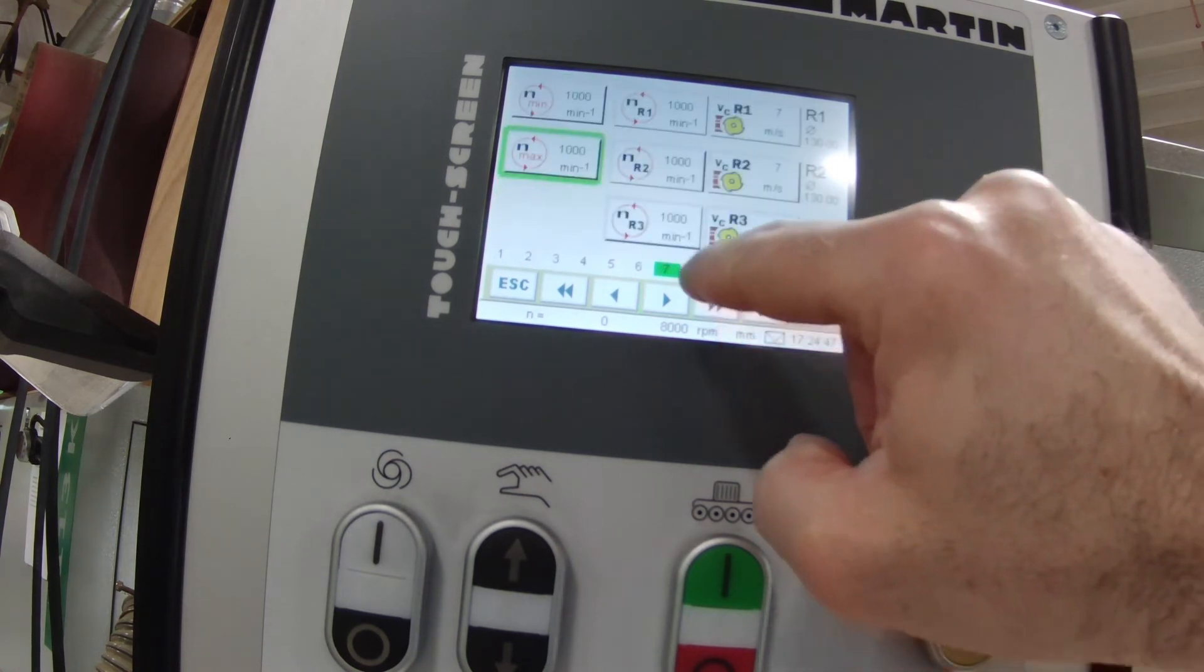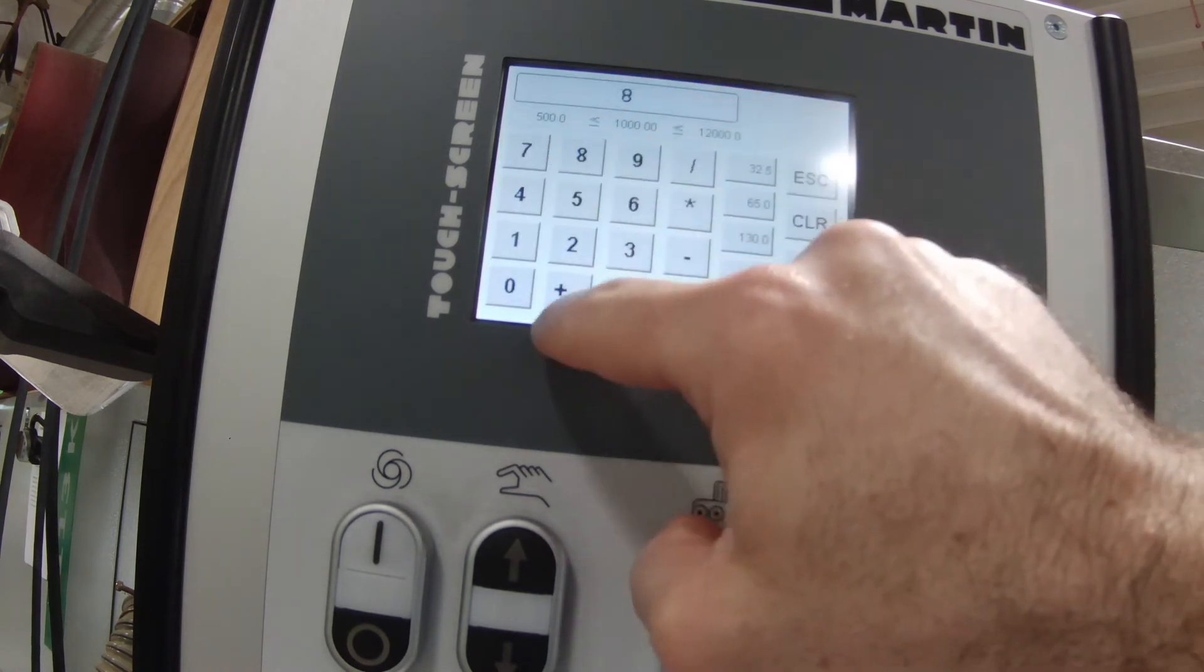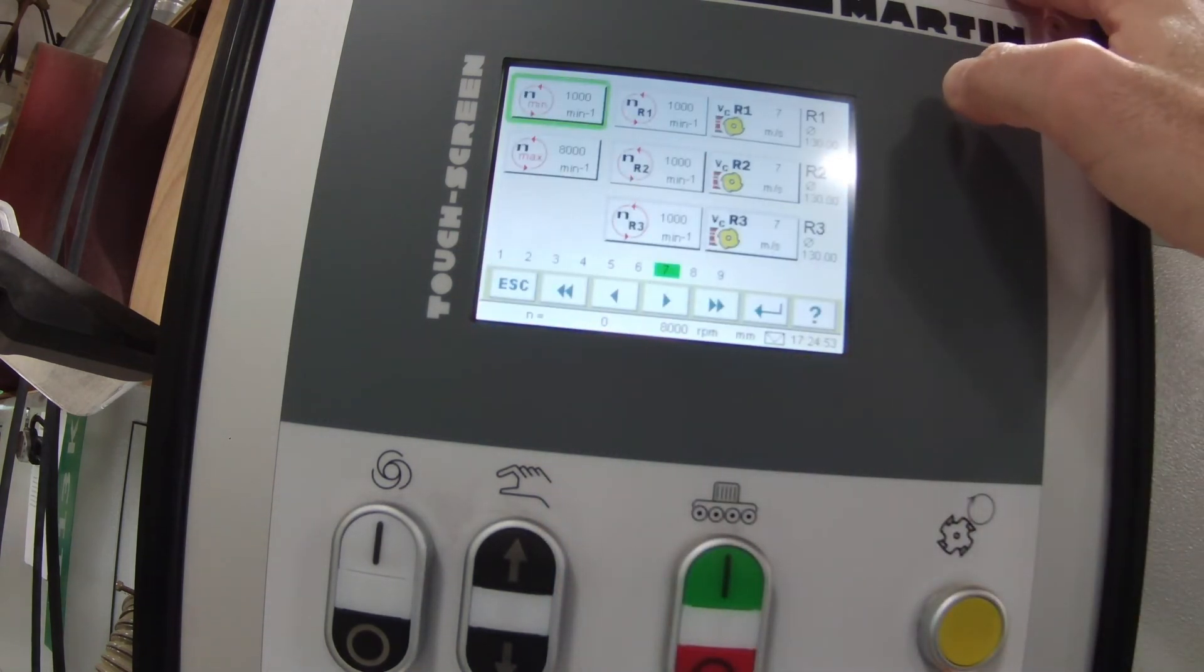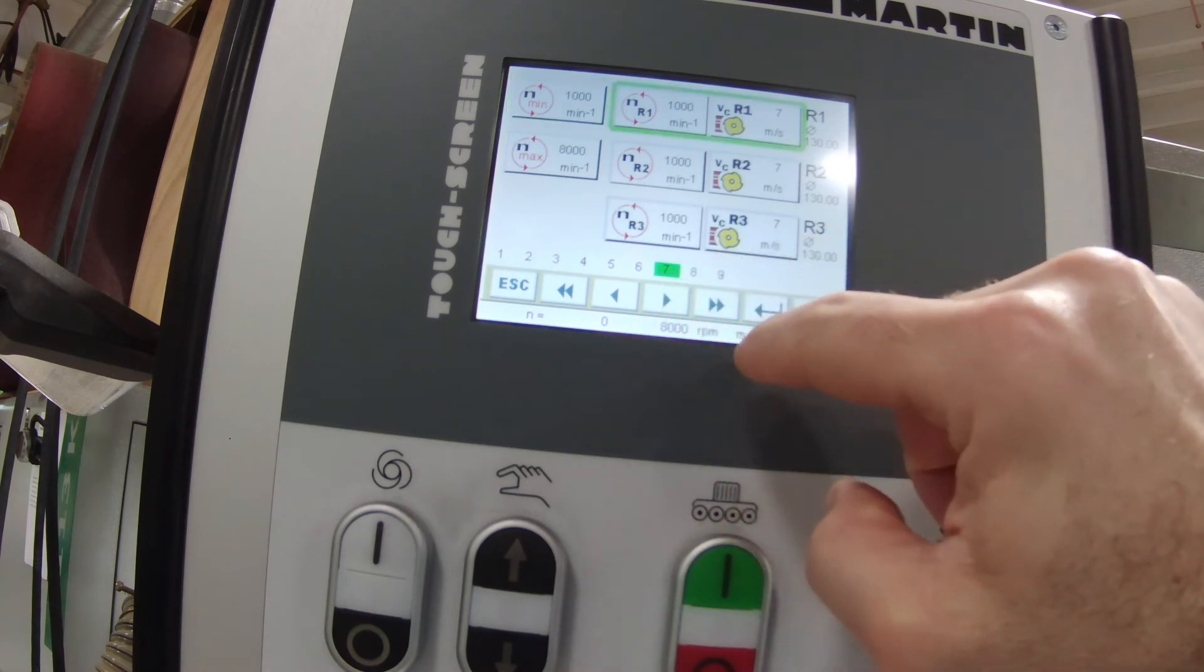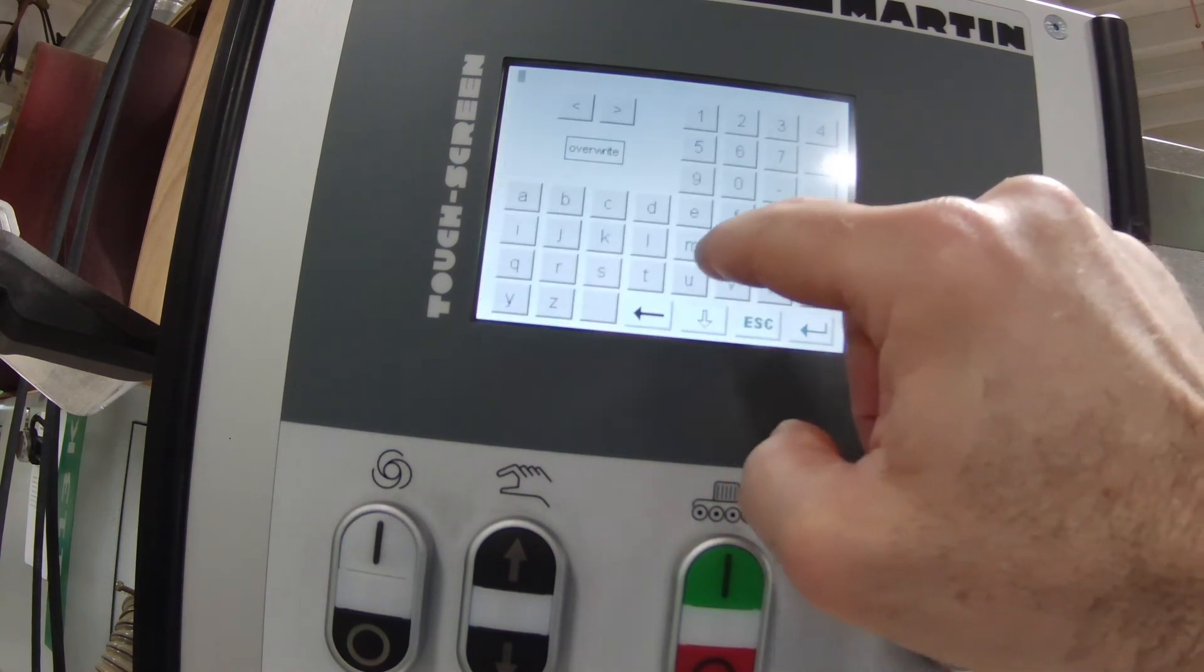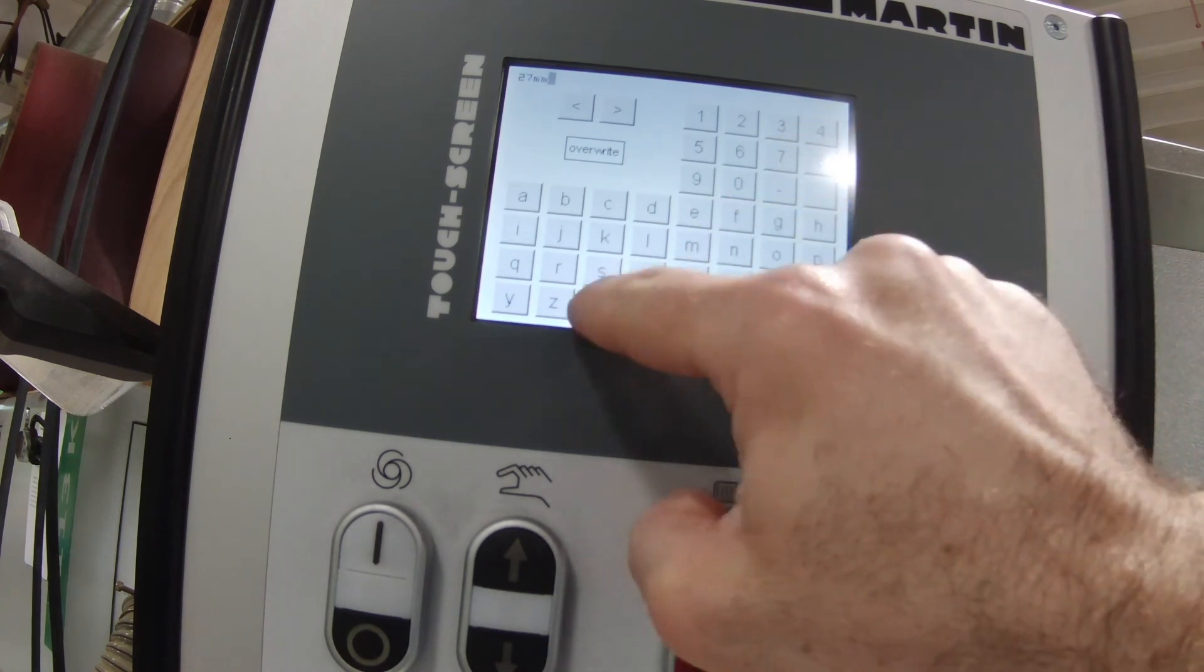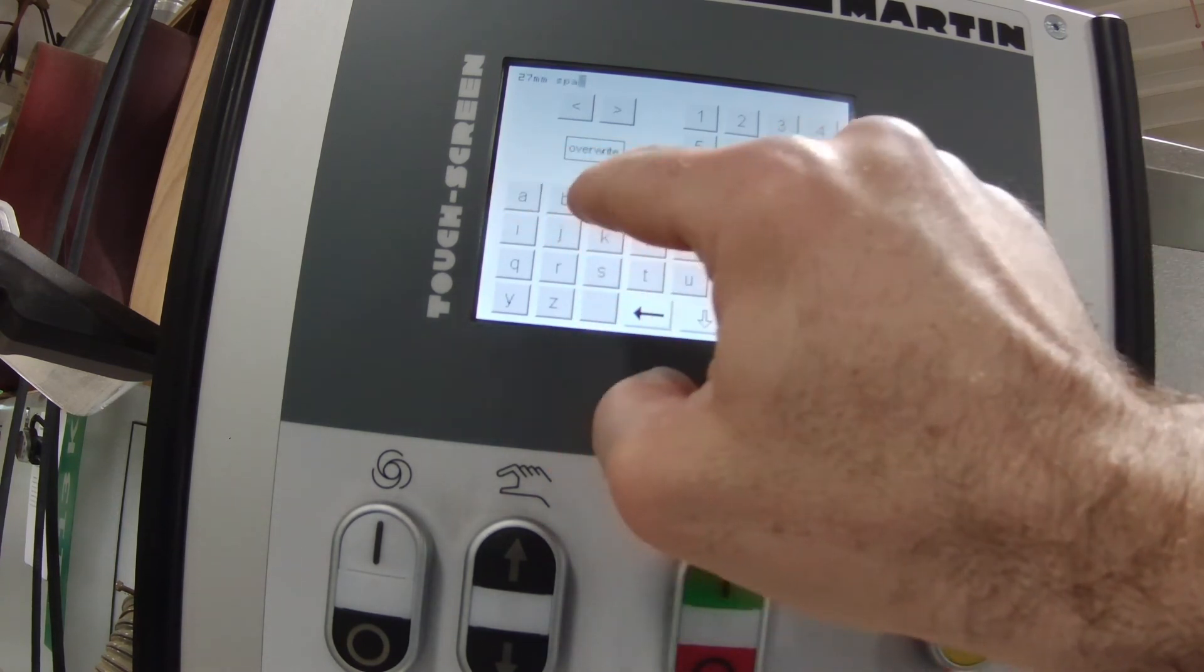I ended up hitting save a little bit too quick, so I go back in, edit it, set the maximum RPM to 8,000, which is what I'm going to use for this cutter. I don't worry about the individual RPMs on the right, just the maximum one. And I'm going to give it a note, basically to remind myself that for this particular setup, I need 27 millimeters of spacers.